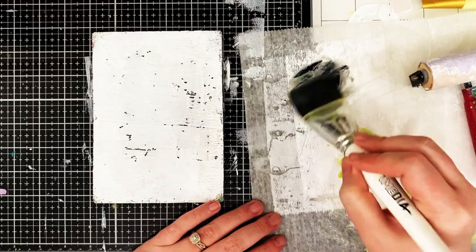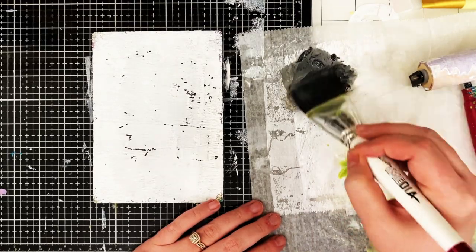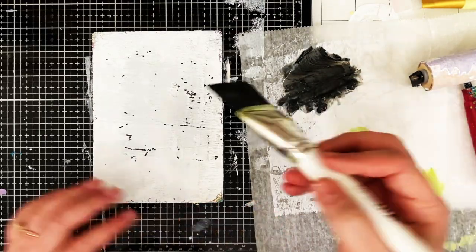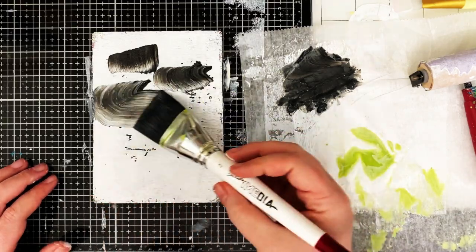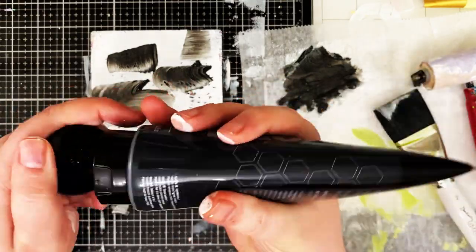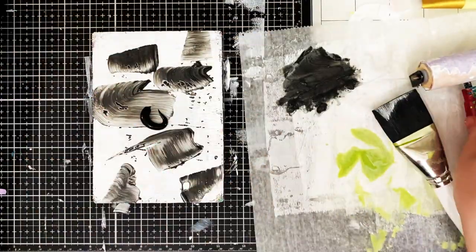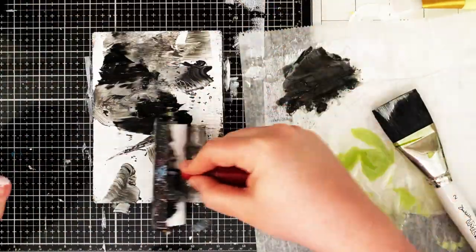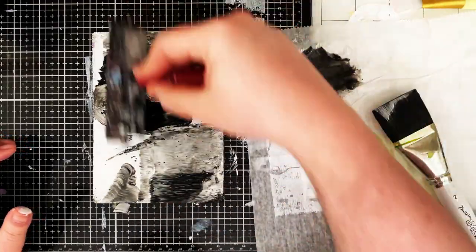So after I have the white paint down, I took some Liquitex Basics black, just watered it down, and I'm just kind of swishing it onto my plate. There's no rhyme or reason, I just wanted it to look really watery and fluid and make a kind of a gray to mix with the white.